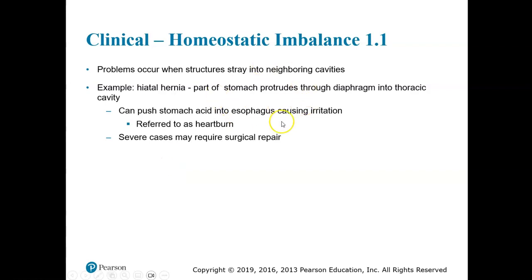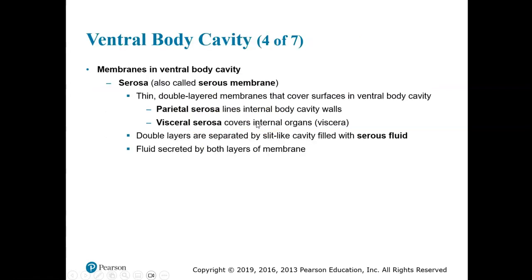Homeostatic imbalance note 1.1: problems occur when structures stray or push into neighboring cavities. An example is a hiatal hernia, when part of the stomach protrudes through the diaphragm into the thoracic or chest cavity. This can push stomach acid into the esophagus causing acid reflux or heartburn, and sometimes surgery is required to correct it.